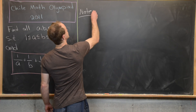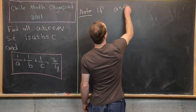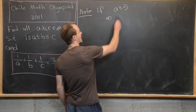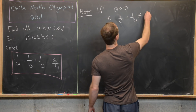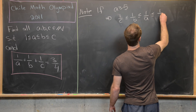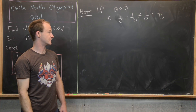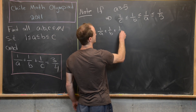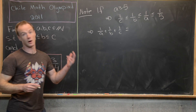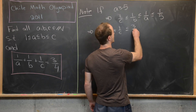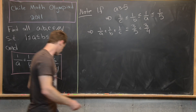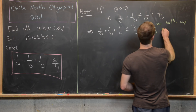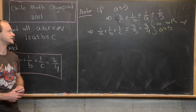The first thing to notice is that if A is bigger than or equal to 5, then B and C are also bigger than or equal to 5. Taking the reciprocal, 1/C ≤ 1/B ≤ 1/A ≤ 1/5. That means 1/A + 1/B + 1/C ≤ 1/5 + 1/5 + 1/5 = 3/5, which is strictly less than 3/4. So there are no solutions with A ≥ 5.